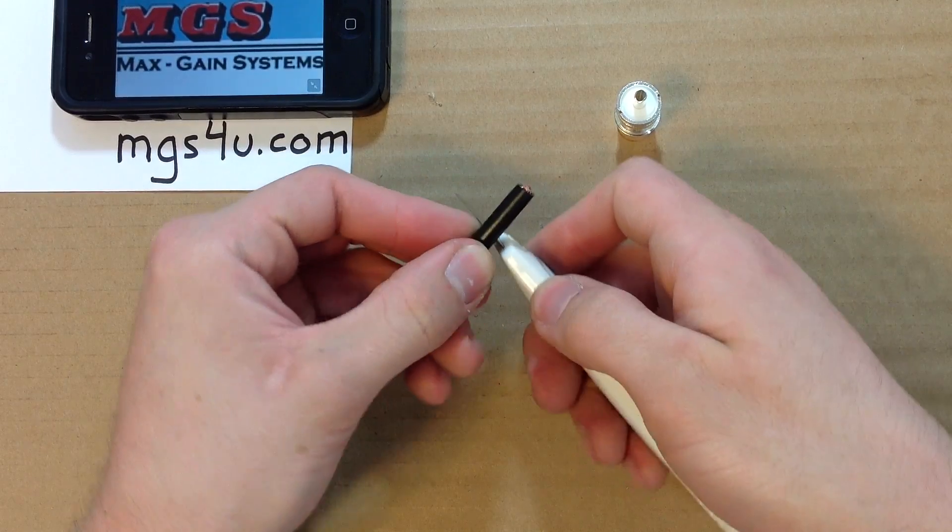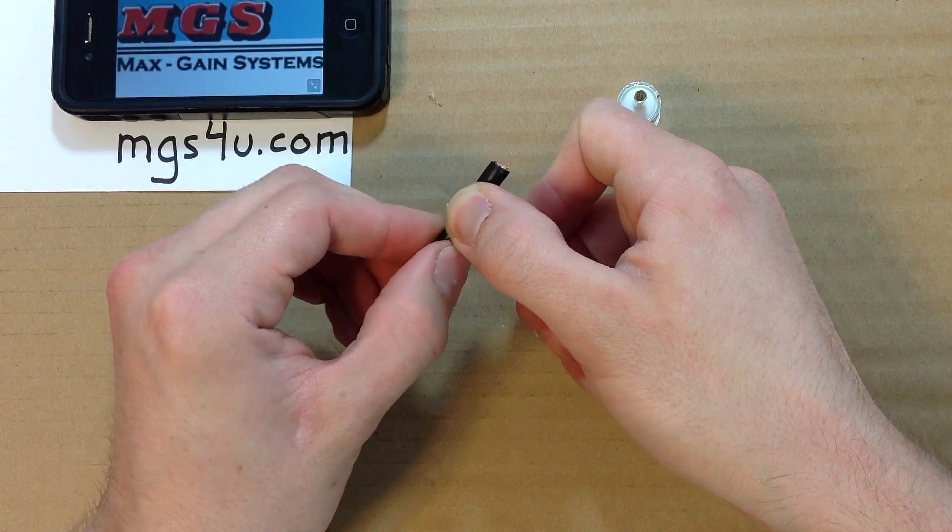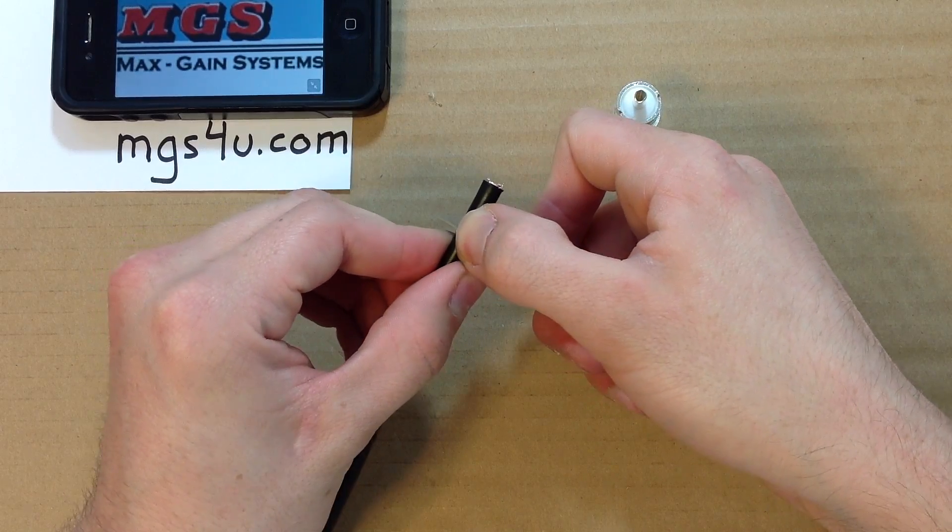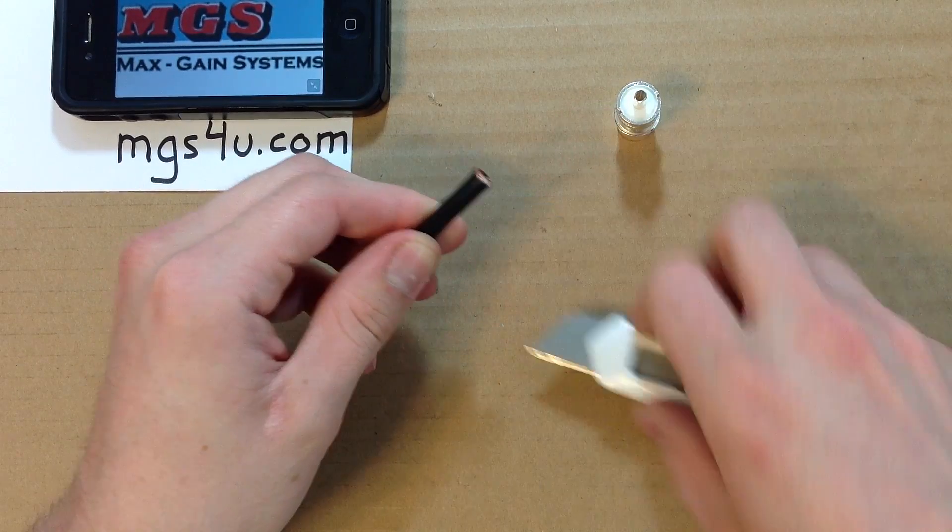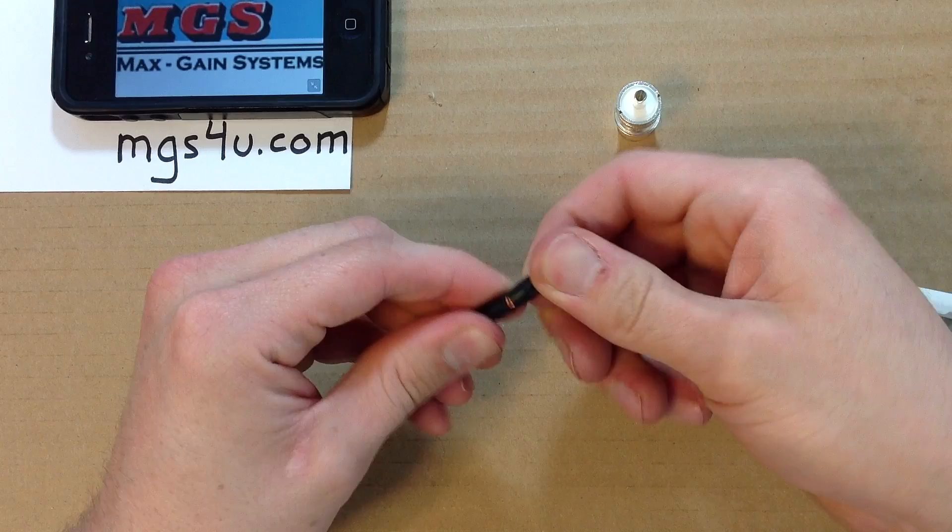Grab your utility knife to cut around the coax where you marked it. Only cut through the black jacket. Do not cut through the braid inside. Pull off the piece of jacket you just cut.